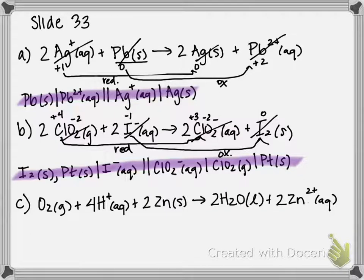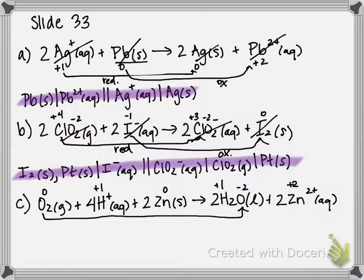Third and final reaction. We're going to figure out what's oxidized, what's reduced. So O2, oxidation state of 0. H plus is plus 1. Zinc, 0. Oxygen in H2O is minus 2. Hydrogen is plus 1. And then zinc is plus 2. So my oxygen is going from 0 to negative 2. It's being reduced. And my zinc is going from 0 to plus 2. It's being oxidized.